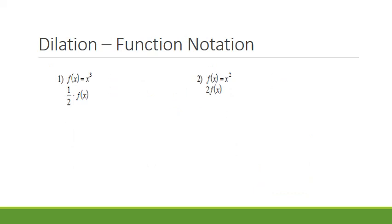Dilation in function notation looks like a number being multiplied times f of x. For number 1, f of x is being multiplied by one half, so this is dilated by one half. For number 2, f of x is being multiplied by 2, so it is dilated by 2.